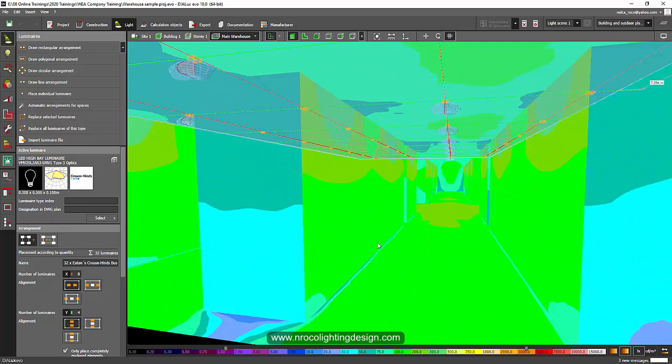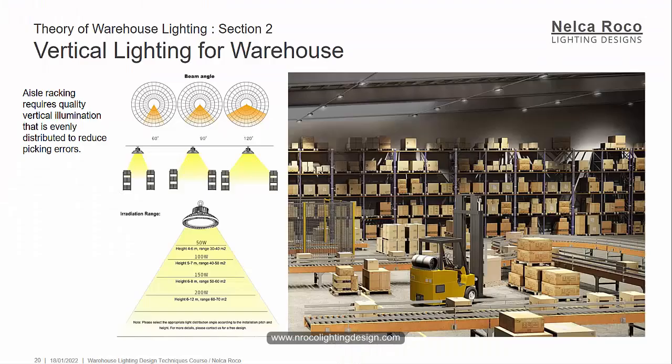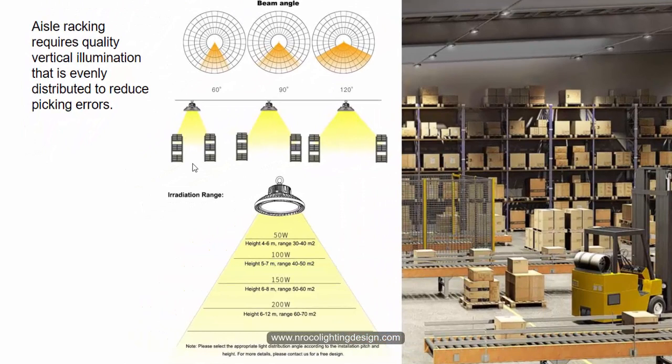So that's why the vertical lighting for a warehouse is very important. This one I added the optics, the beam optics of one fitting, and you can see this is 60 degree beam angle and it is applicable for a narrow alley or a narrow corridor racking system.